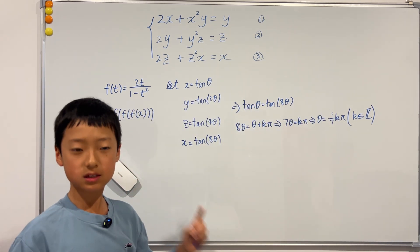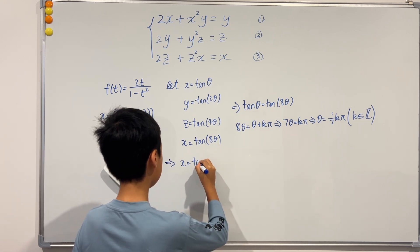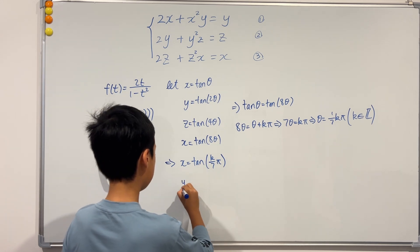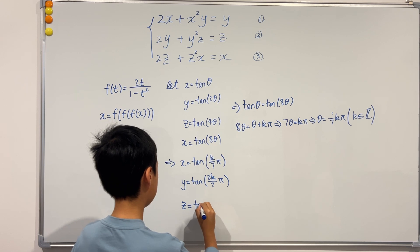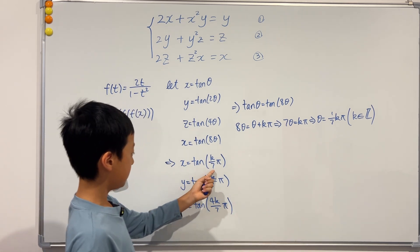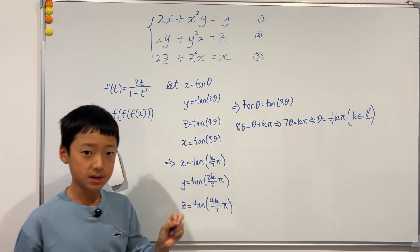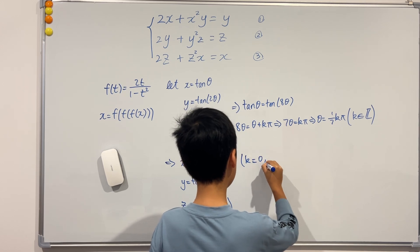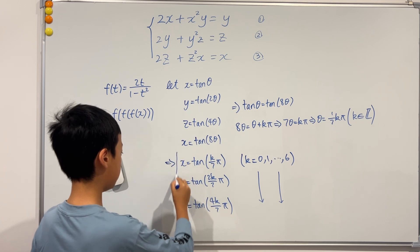Now we substitute theta back in. x equals tangent(k*pi over 7), y equals tangent(2k*pi over 7), and z equals tangent(4k*pi over 7). Since the argument inside tangent has a denominator of 7, there are seven distinct solutions for x — seven distinct values for k. k goes from 0 to 6, and the same applies for y and z. This is the solution.